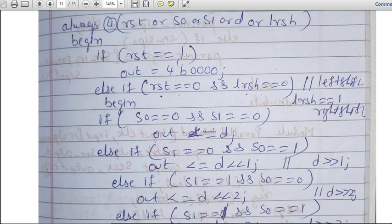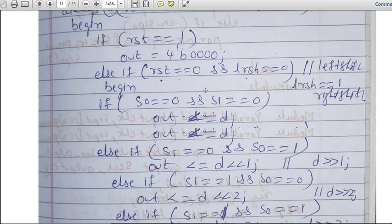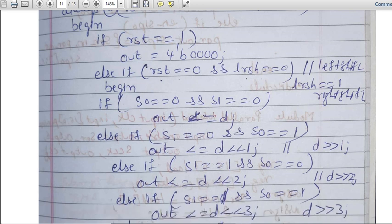Suppose if RST is not 1. If RST equals 0 and LRSH equals 0, that means it will shift left. If you want to shift right, then you have to make this as 1 - LRSH should equal 1 if you want to shift right. Next, begin.